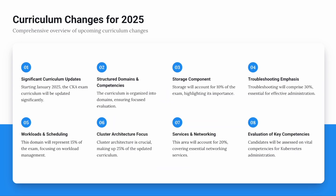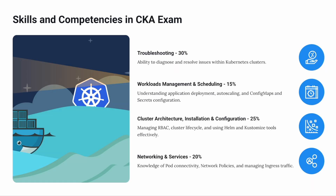Here is the exact percentage breakdown for each exam domain. Troubleshooting is the major focus, comprising 30% of the exam, highlighting the necessity for candidates to develop strong problem-solving skills for effective administration of Kubernetes environments. Workloads and scheduling are also critical, representing 15% of the exam. Cluster architecture makes up 25%. Networking and services account for 20% of the examination, covering essential topics such as managing ports, connectivity, and network policies. Candidates will be assessed on their ability to evaluate key competencies vital for Kubernetes administration.